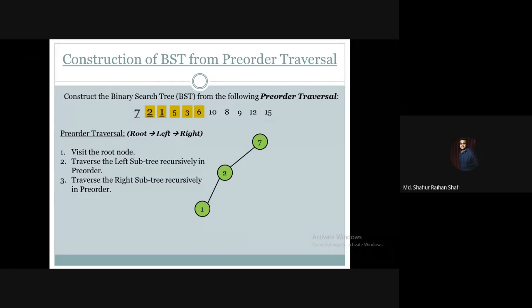So 1 will be the left subtree of node 2, and the right subtree of 2 will be formed by elements 5, 3, 6. Again applying pre-order BST form, 5 will be the root of the right subtree of 2. Element 3 is less than 5 so it becomes the left subtree of 5, and 6 is greater than 5 so it becomes the right subtree of 5.